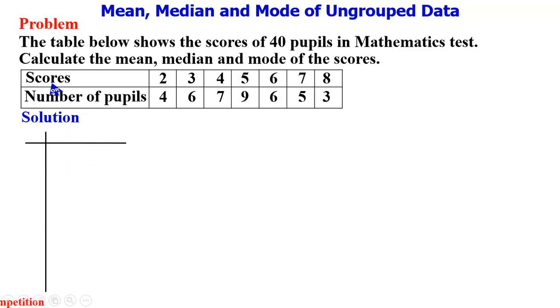At that point, our scores will be taken to be x, and our number of pupils will be taken to be f, which is a short form of frequency. So we have our scores under the x column and the corresponding number of pupils on the f column.